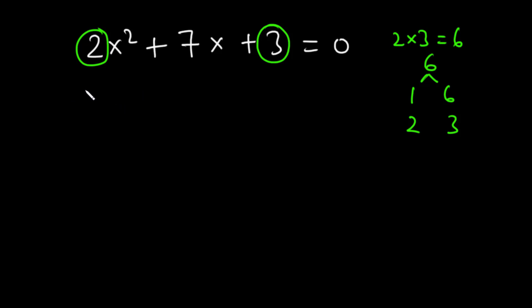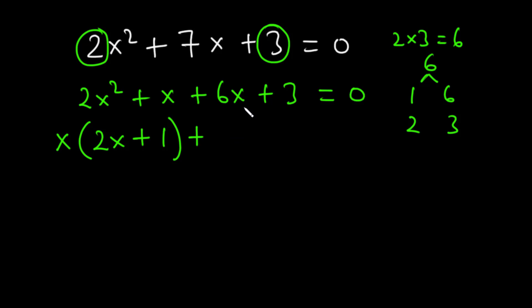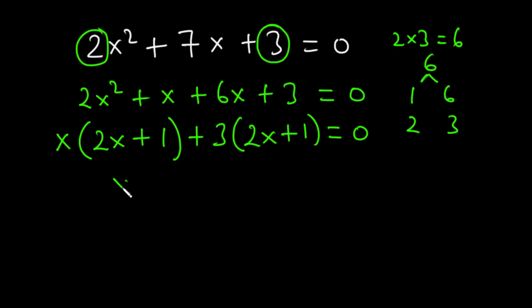So this equation expands to 2x squared plus x plus 6x plus 3 equals 0. Now we factorize. The GCF between 2x squared and x is x, so we have x on the outside. 2x squared divided by x is 2x, and x divided by x is 1. The GCF between 6x and 3 is 3, so we have 3 on the outside and 2x plus 1 inside the bracket, giving x(2x + 1) + 3(2x + 1) = 0.